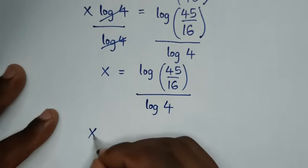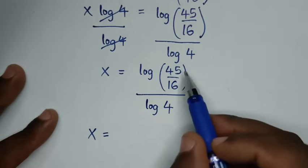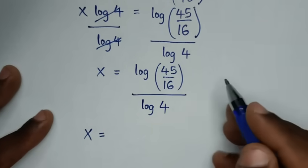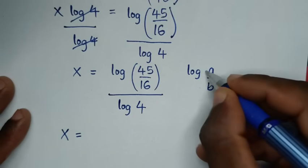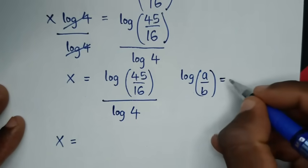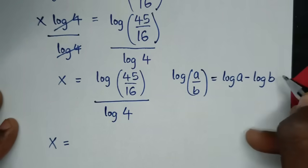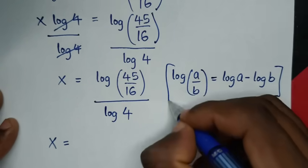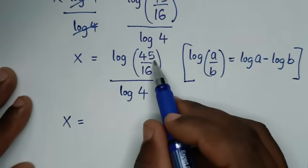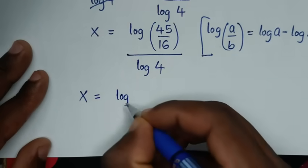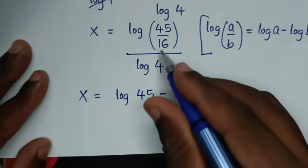Then in the next step, x is equal to log of 45 over 16 divided by log of 4. The part log of 45 over 16 is in the form of the rule which is log of a over b is equal to log of a minus log of b. So we will apply this form: log of 45 over 16 is the same as log of 45 minus log of 16.